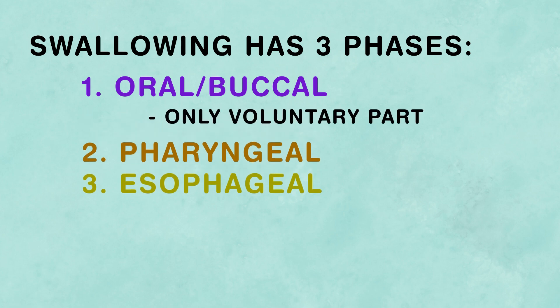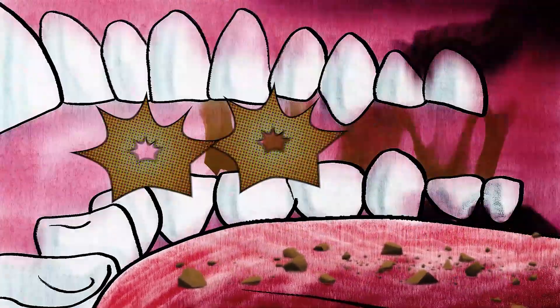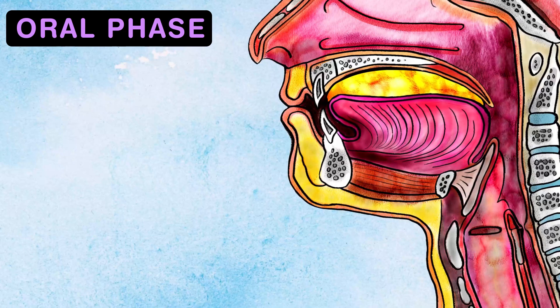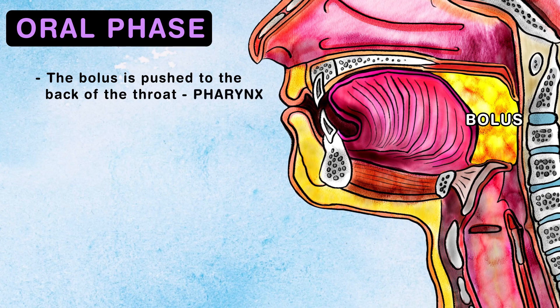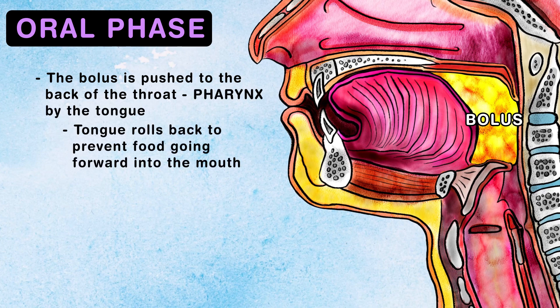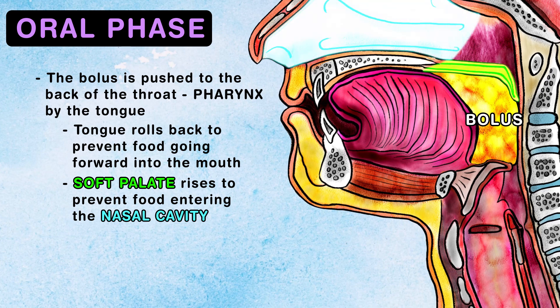The oral phase is the only voluntary part of swallowing. After food has been chewed and moistened with saliva, the resulting bolus is pushed to the back of the throat, called the pharynx, by the tongue. This involves the tongue rolling back to prevent food from going forward into the mouth. As this happens, the soft palate rises to prevent food from entering the nasal cavity.